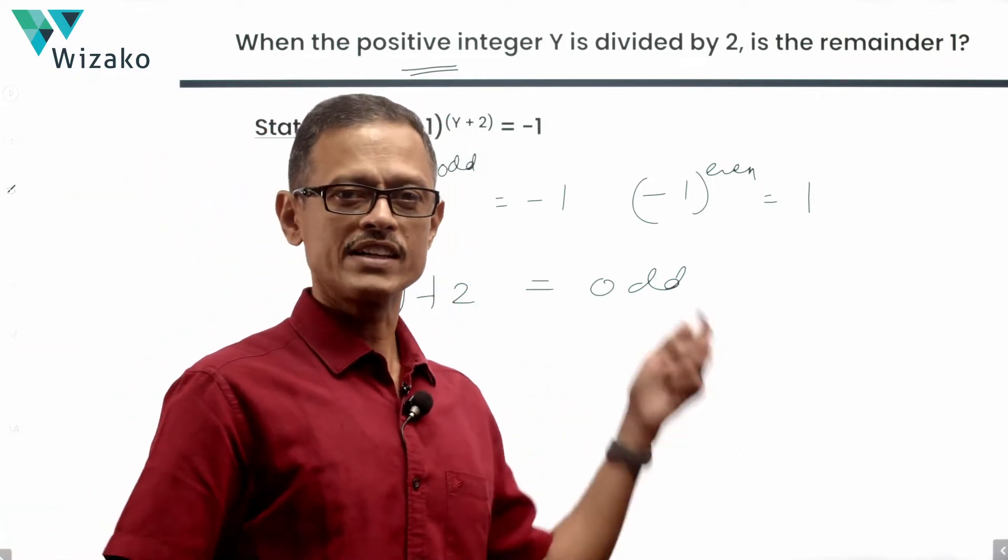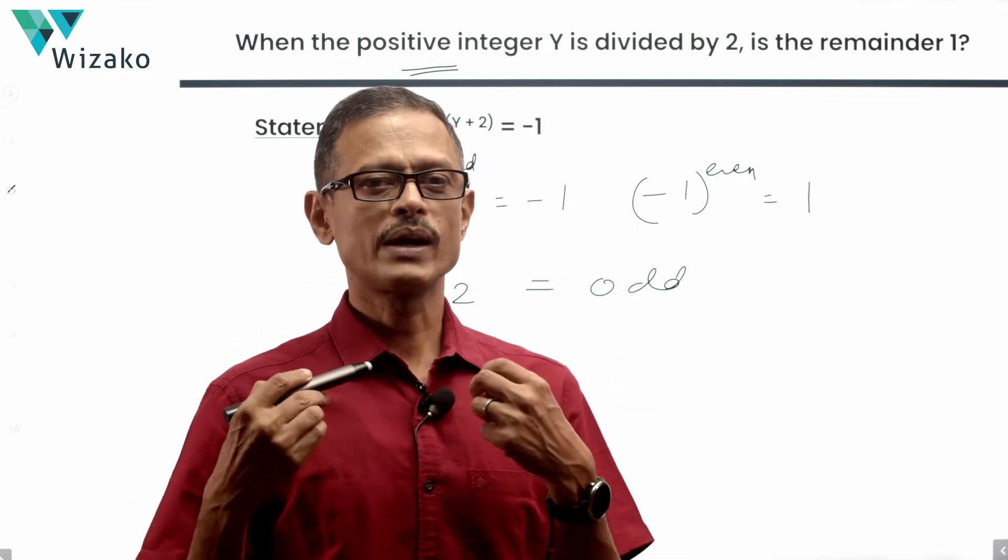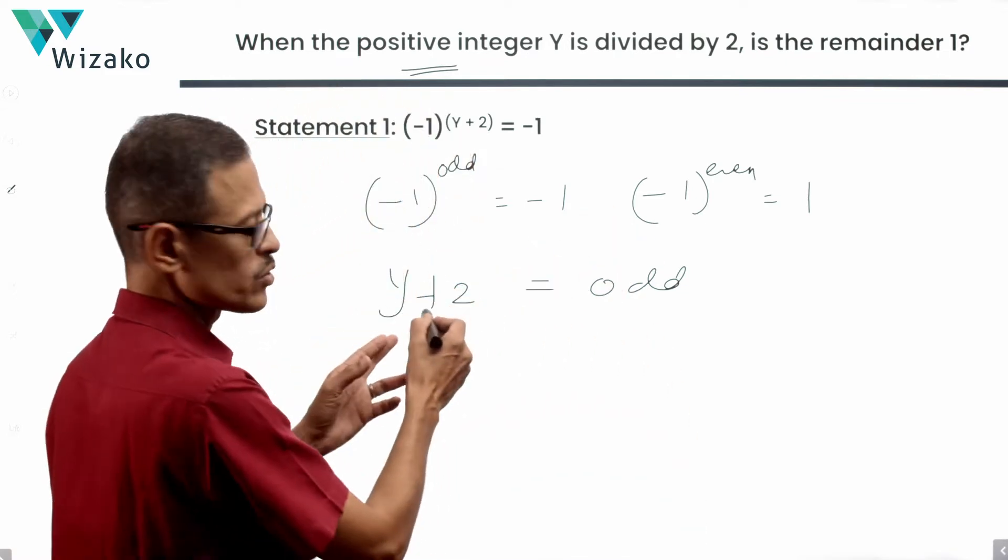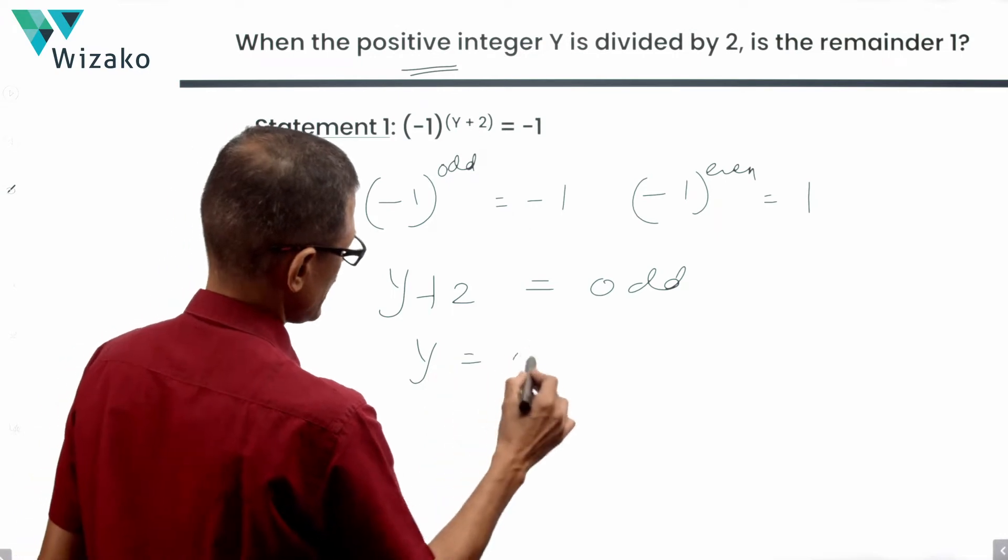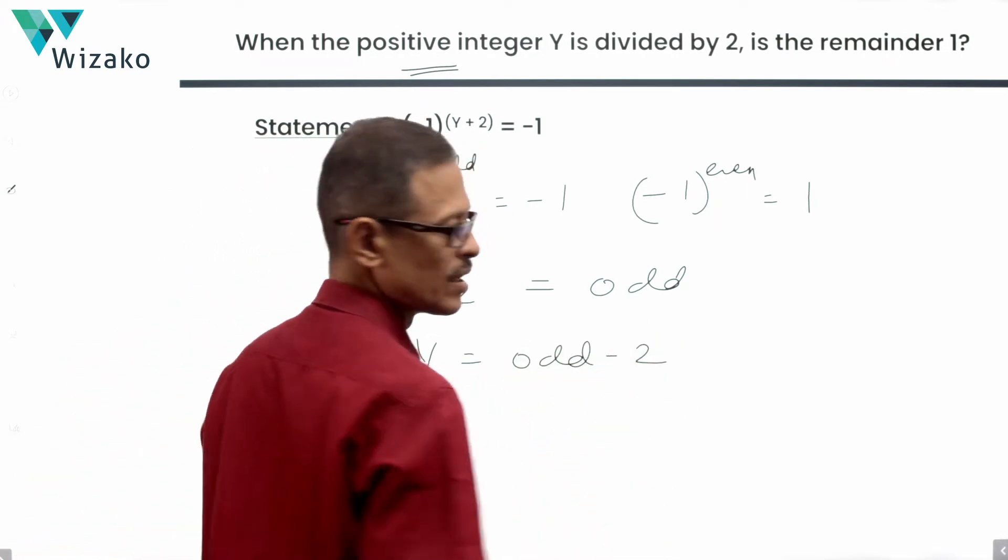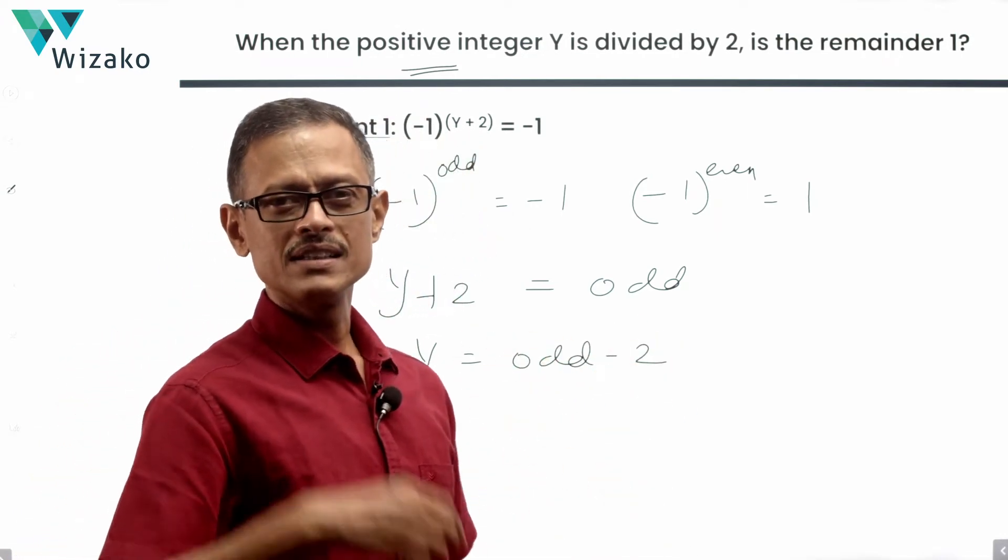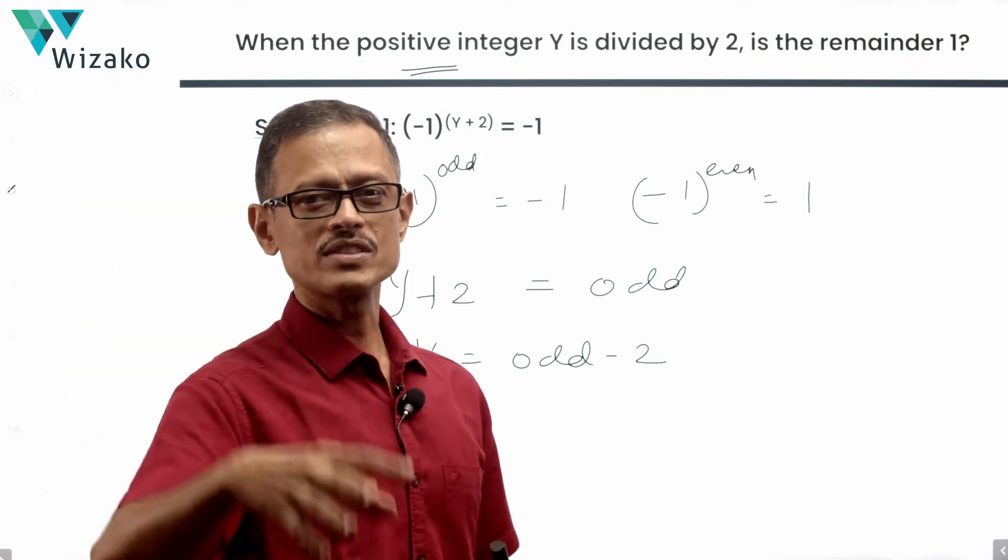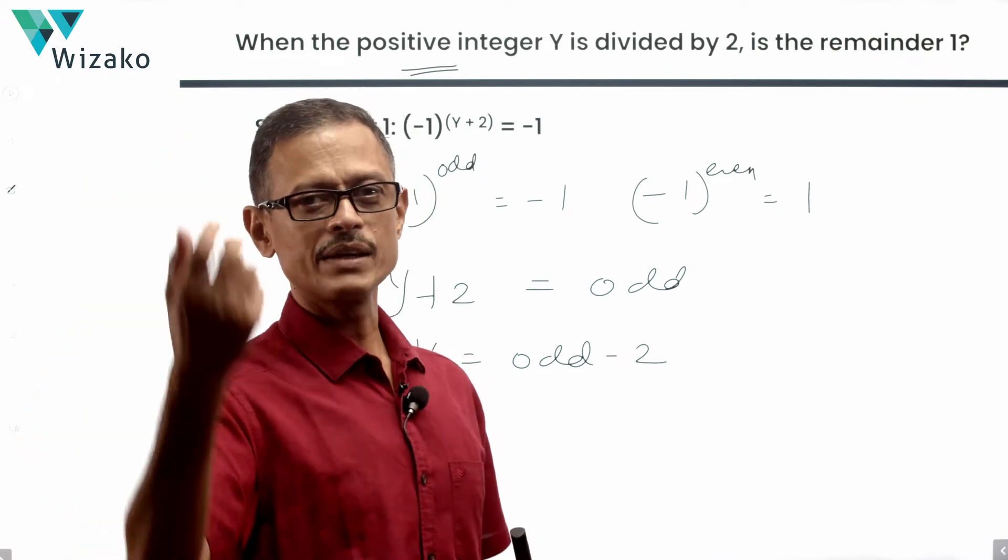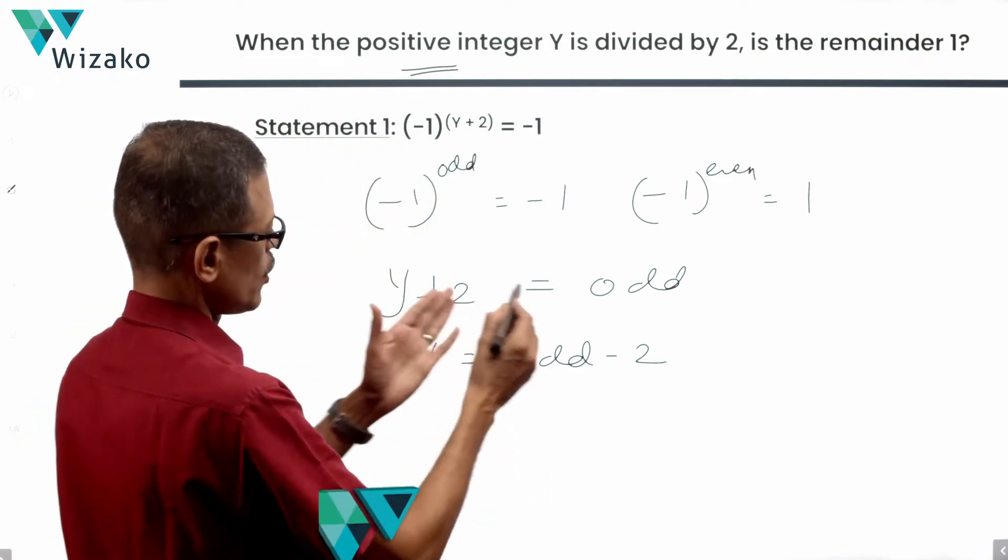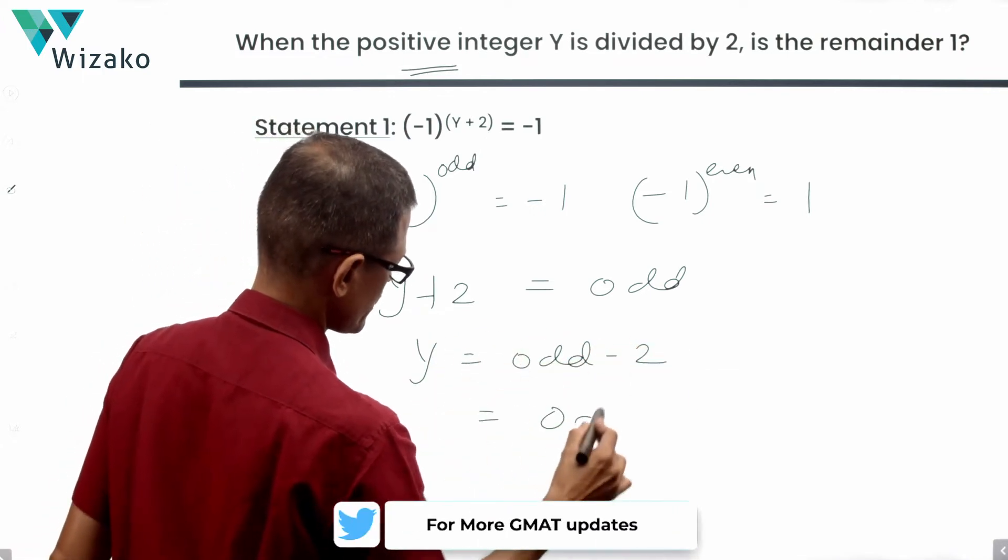So Y+2 is the power that -1 is raised to according to the statement. So Y+2 has to be an odd number. Y+2 is odd. Y will be equal to an odd number minus 2. Odd number minus 2 is an odd number. 3 minus 2 is 1. 11 minus 2 is 9, which is odd. 33 minus 2 is 31, which is odd. So Y is an odd number minus 2. So Y is essentially an odd number.